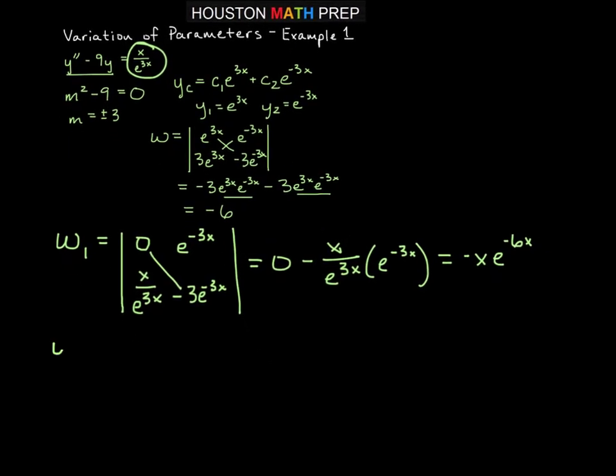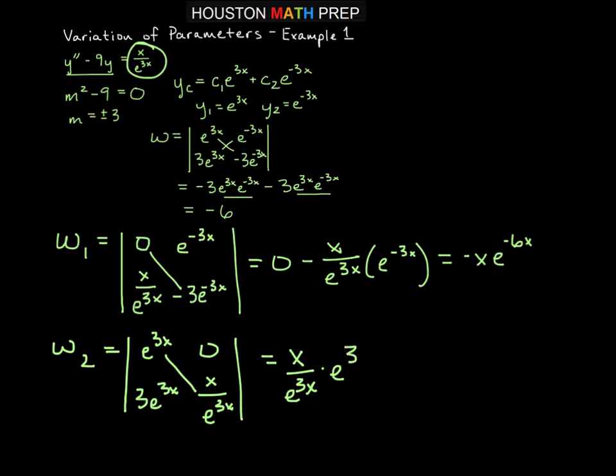And now we also need w2. So w2 then, that means we replace 0 and g sub x in the second column. So 0 and x over e to the 3x go in column 2. And then we'll leave column 1 alone from the original, which is e to the 3x and 3 e to the 3x. And now doing the determinant there, we'll get x over e to the 3x times e to the 3x minus, when we do that diagonal, that'll be 0. So these will reduce, and that will give us x for w2.